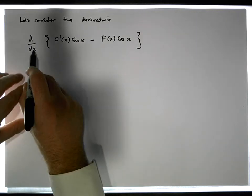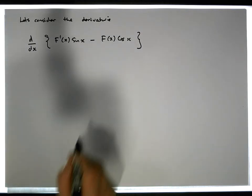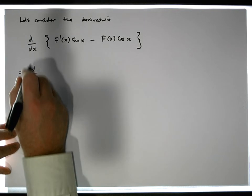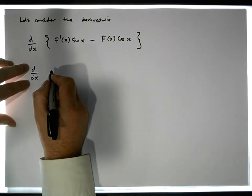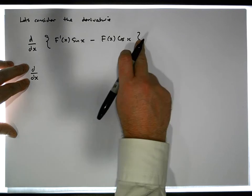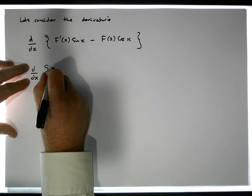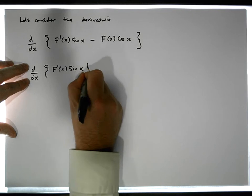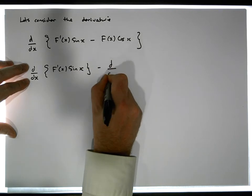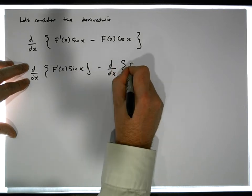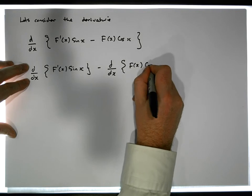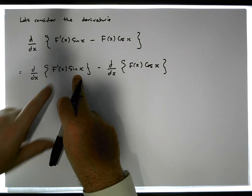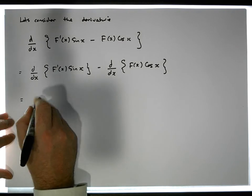This is the same as the d/dx of F prime of x sine of x, minus the d/dx of F of x cosine of x. These are not partial derivatives. We'll differentiate each part using the product rule.